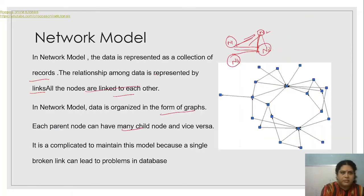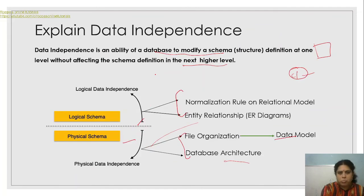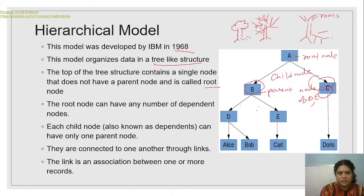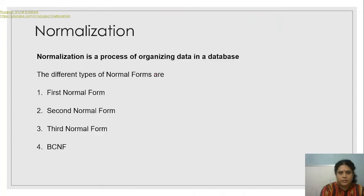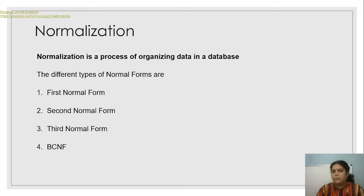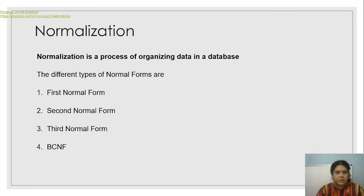Coming to normalization: normalization is the process of organizing data in a database. There are different types of normal forms — the first normal form, second normal form, third normal form, and BCNF, also known as Boyce-Codd normal form or 3.5 normal form. This is one of the ways to eliminate redundancy, as discussed in the previous video on features of the database.